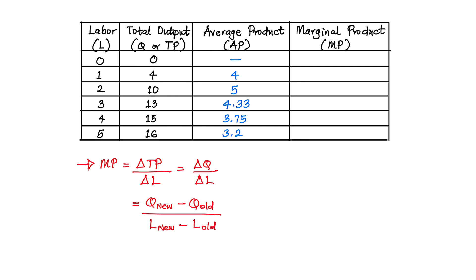Starting with the first box, the level of output here is 0 and before 0 we have no quantity, which means there is no old quantity and neither do we have old labor — this is the very first position. So we can't fill in anything in this first gap, so we simply put a dash.